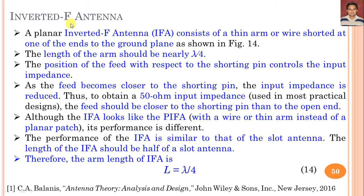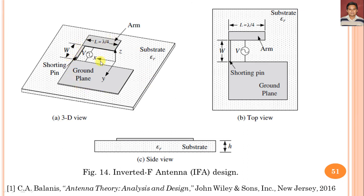The inverted F antenna consists of a thin arm of wire shorted at one of the ends to the ground plane. As you can see in this figure of the inverted F antenna, if we consider the full size ground plane and provide the feed at the center, that is a planar slot antenna. If we cut some part of this slot antenna and take the length L equal to lambda by 4 and provide a shorting pin, looking from the top view we can see the inverted F antenna design.